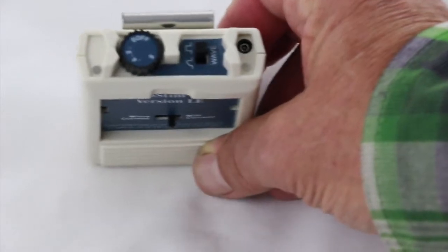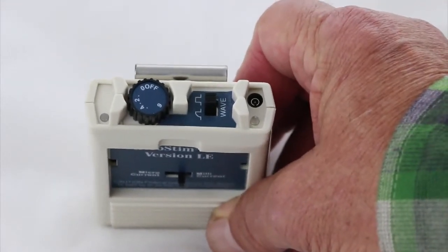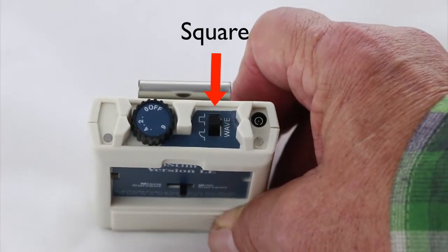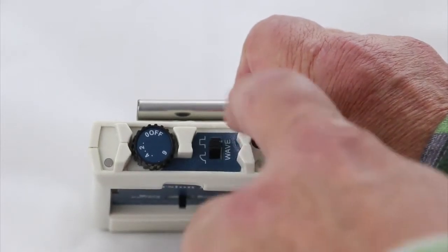If we move up to the top of the unit, you'll see two switches. This switch here, if it's to the back, it's on square wave. And if we slide it to the front, it's slope wave.